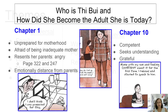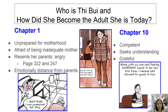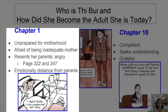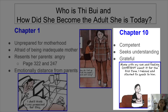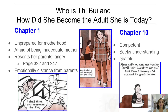One idea to focus on is who is Thi Bui and how did she become the adult she is today? Chapter one and chapter ten are like bookends that explain the answer. We see in chapter one how she's very unprepared for motherhood and afraid of being an inadequate mother. Later in the book we also see how she resents her parents and has anger towards them and emotional distance from them. By chapter ten we see the transformation of Thi as she's gone through her family history — she's competent, seeking understanding of why her family behaves this way, and she is grateful.